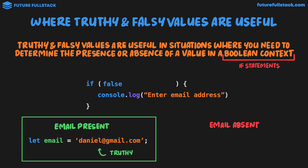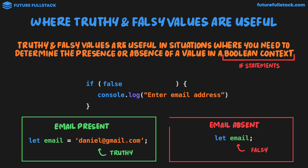Let's now look at the case where the email is absent — something like let email, where the variable has been declared but has no value. If you were to try to access the value of email inside the console, you would get back undefined, and undefined is a falsy value. So we have not undefined. Inside this boolean context, undefined is falsy — the same as not false, which evaluates to true. So because we have true inside our if statement condition, the code block will run: console.log "enter your email address," which makes sense because email has no value.